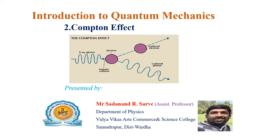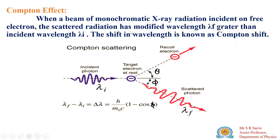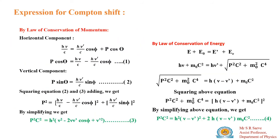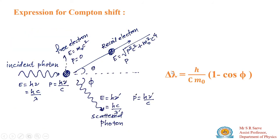Today we are going to learn about the Compton effect and how to obtain the expression for the Compton shift. That shift in wavelength is delta lambda equals h divided by m0c, times 1 minus cos phi.